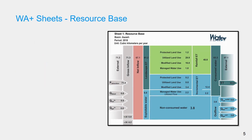The resource base sheet provides a general overview of the water resource situation of a river basin. Let us see what the numbers in the sheet represent, one by one. Starting from the title block, it shows the name of the sheet — the resource base sheet — the name of the river basin for which the sheet is developed, the period covered by the analysis, and the unit. Some basins are large enough to use cubic kilometers per year; for small basins the unit could be million cubic meters per year.